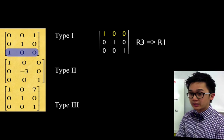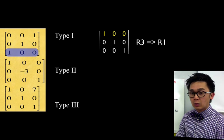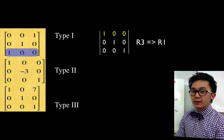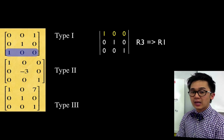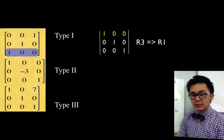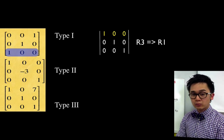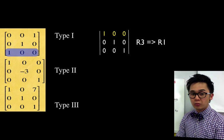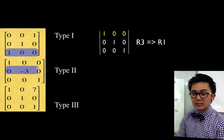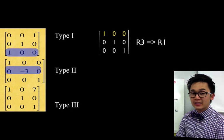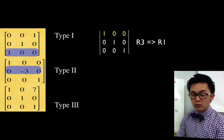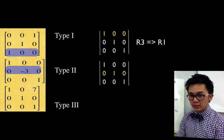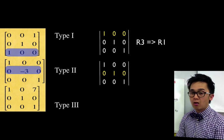For type 2, the second row has 0, -3, and 0. To change -3 into 1, we multiply -1/3 to row 2 so that -3 becomes 1. Our new matrix now has a main diagonal that is all 1, achieving the identity matrix form.